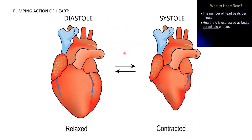Let's see the pumping action of the heart. Diastole and systole are the two concepts. Diastole is when the heart relaxes — that means when the heart receives blood. Systole is when the heart contracts or pumps blood out to the body. Heart rate is the number of heartbeats per minute. Basically it is 72 beats per minute.